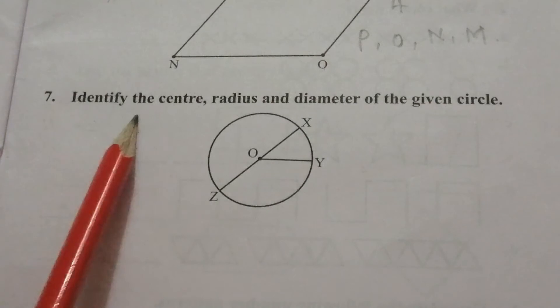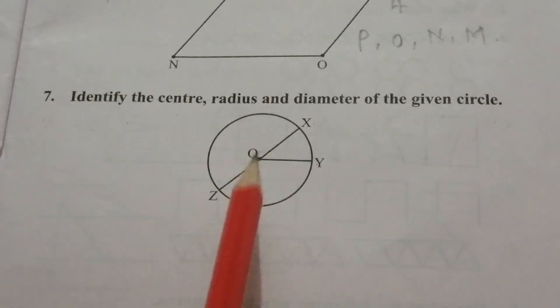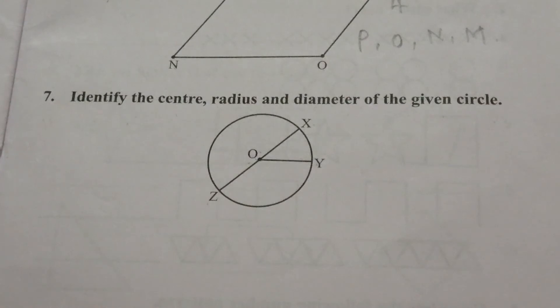7. Identify the center, radius, and diameter of the given circle. Here the center is O. Radius is OY, OX, or OZ. And diameter is XZ.